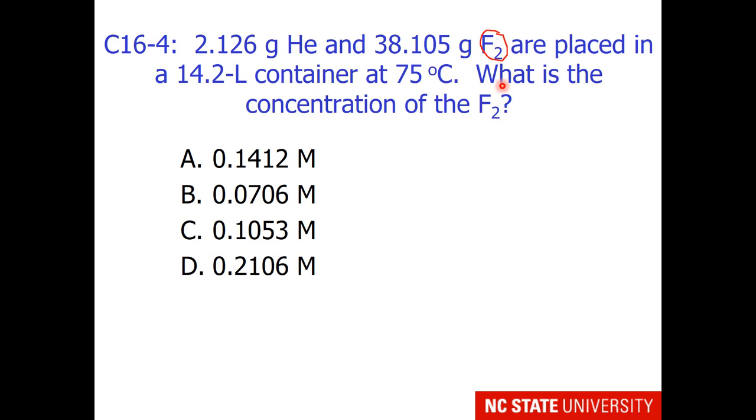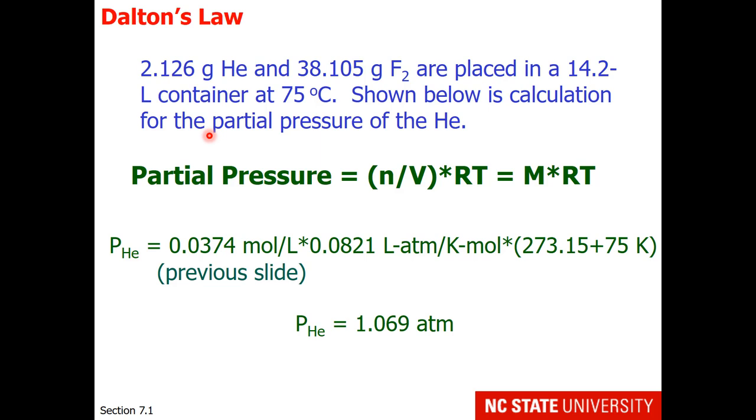Continuing with this problem, we can also calculate the partial pressure of the helium. The partial pressure of a gas in a mixture is equal to the molarity times RT. So if we take the molarity of the helium, the calculation was shown on a previous slide, and multiply it by the ideal gas law constant and the temperature in Kelvin, the answer will be 1.069 atm.